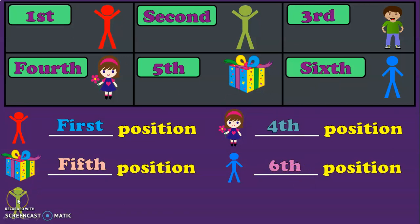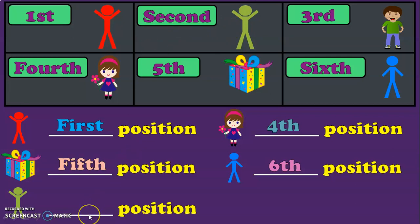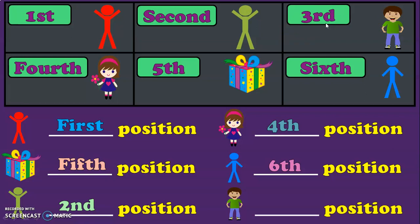The location corresponding to the next object is second — S-E-C-O-N-D. The numeral corresponding to that is 2 followed by N-D, which is 2nd. And the last question: the location corresponding to this object is 3 followed by R-D, and the number name corresponding to that numeral is third — T-H-I-R-D.